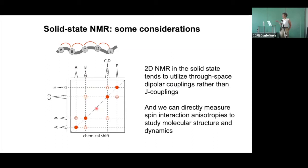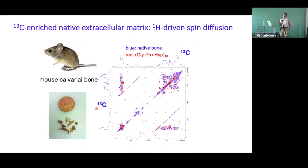When you're looking at the extracellular matrix and wanting to know about the structure of the different molecules in it, you have to look at the whole intact matrix, because the structure of the molecules changes if you try and take one component out. That means you need carbon-13 enriched native tissues, because you can only get those kinds of two-dimensional spectra with carbon-13 and nitrogen-15 enrichment. About 12 years ago we developed what we call the heavy mouse model — we feed the mouse 30% of its amino acids that are fully carbon-13 and nitrogen-15 enriched, so its tissues end up around 20 to 30% enriched.